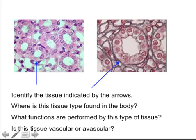What we're looking at here is an example of epithelial tissue. There's a single layer of tissue, and it's as wide as it is tall as it is thick — a shape we call cuboidal. So this is simple cuboidal epithelium.